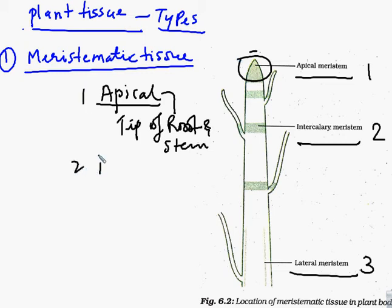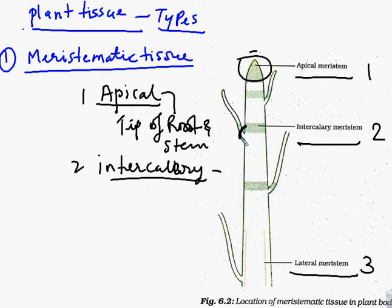The second type is intercalary meristem. Intercalary meristem is found in the nodes or internodes — at the leaves and branches, in their nodes and internodes. This tissue is responsible for the growth of nodes or internodes.